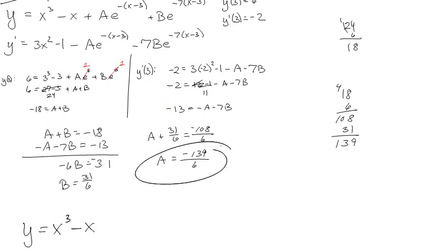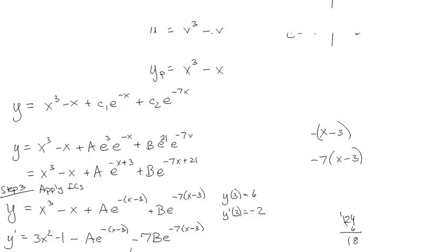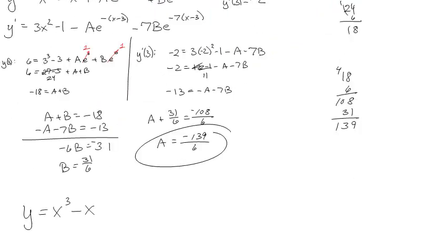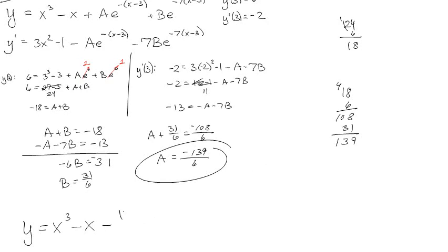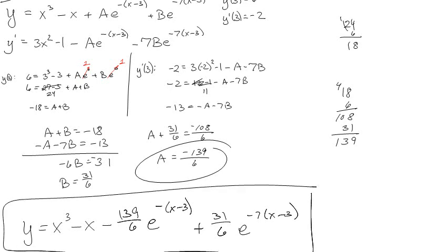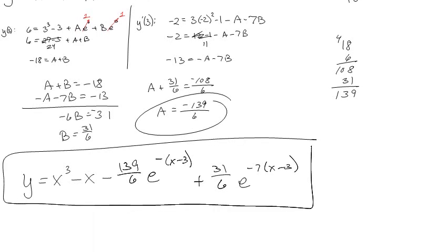So I've got a full solution that y equals x³ - x. So if you think these are ugly, they would be even worse. Minus 139 over 6 e^(-(x-3)), and b which is 31 over 6 times e^(-7(x-3)). And that would be a beautifully full solution, really fantastic. Remember, the strategy is you find the homogeneous solution, you find the particular solution, then you apply your initial conditions, and just do whatever you gotta do to make it work. And that's that.